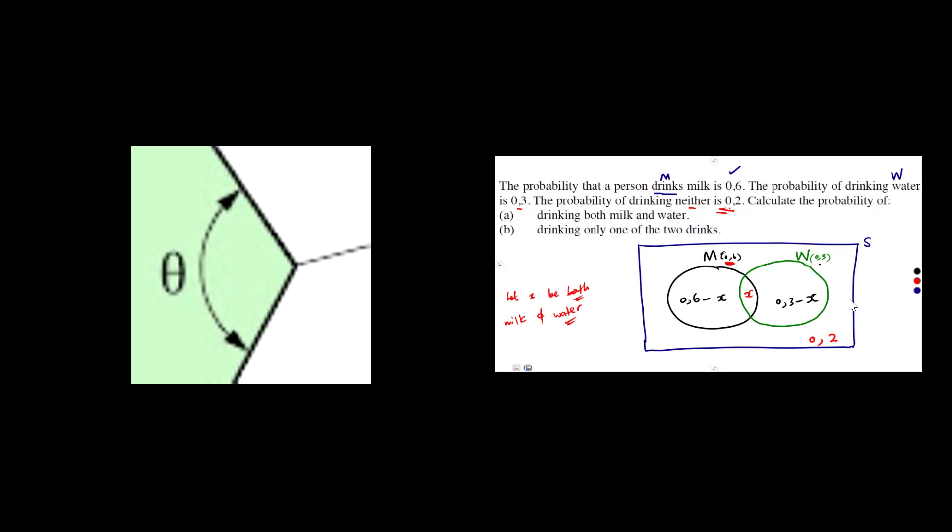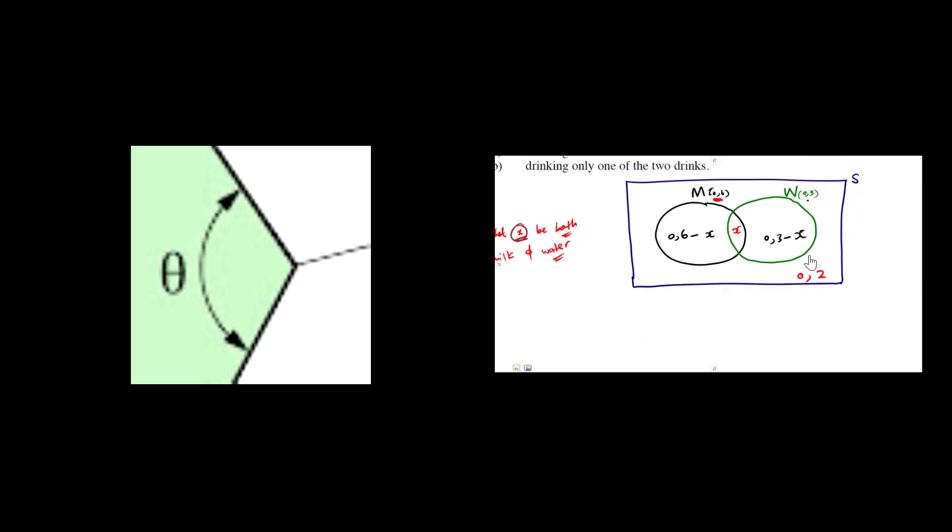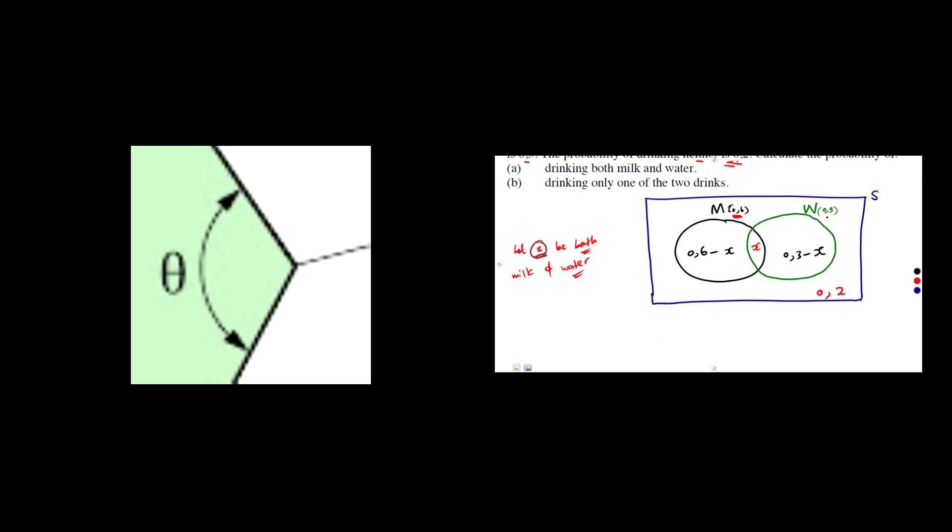So this indication helps us now to calculate X. Remember we said let X. We introduced something which was not part of the question. So let X be both so that by solving the equation, since we do understand that the probability of the sample space is always equal to 1. As long as you are dealing with the sample space. Since the probability of the sample space is equal to 1, we're going to take the probabilities. It's an advantage they have already given us these as probabilities.